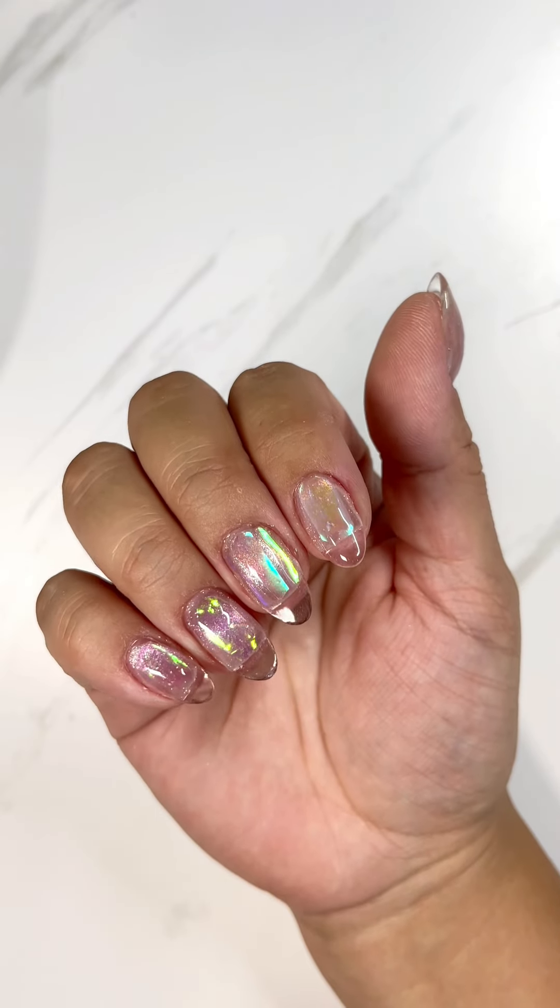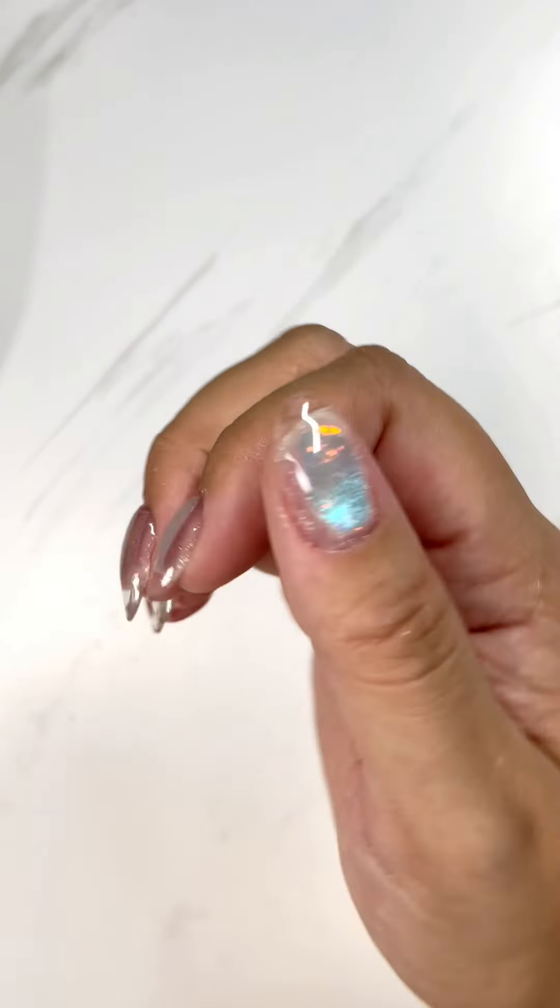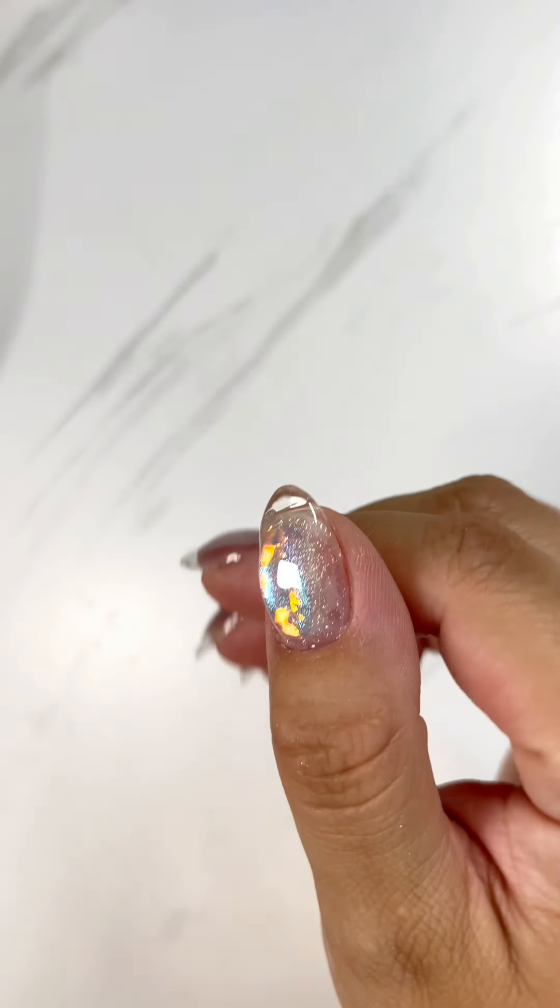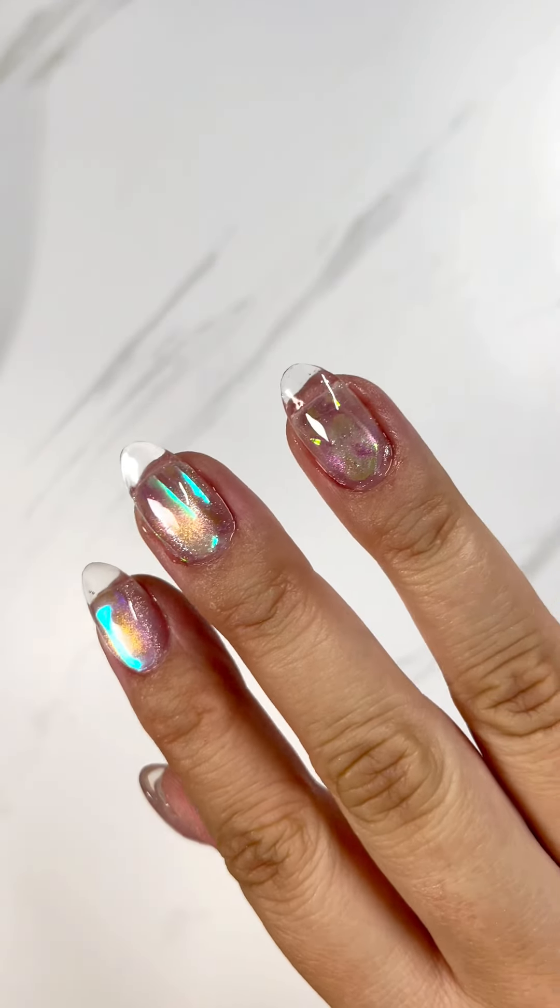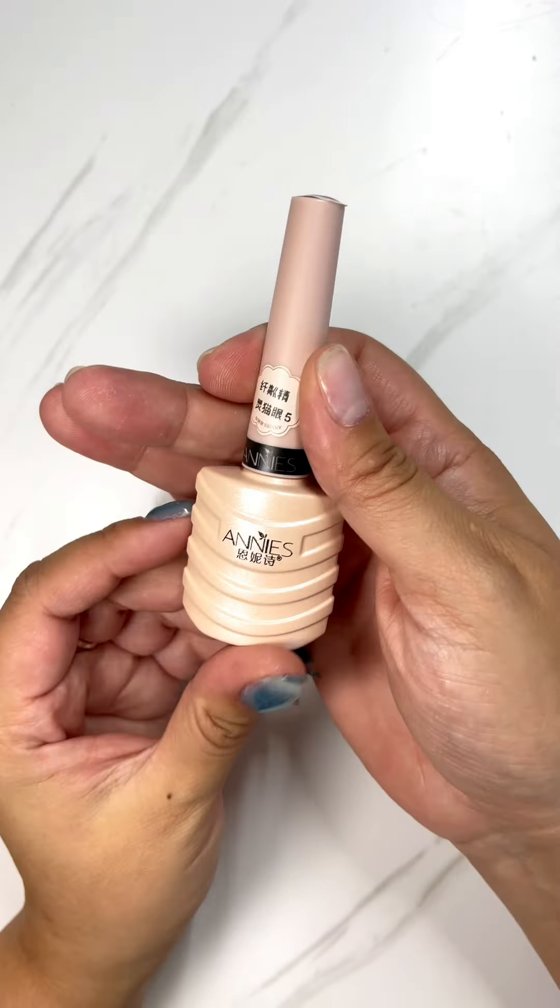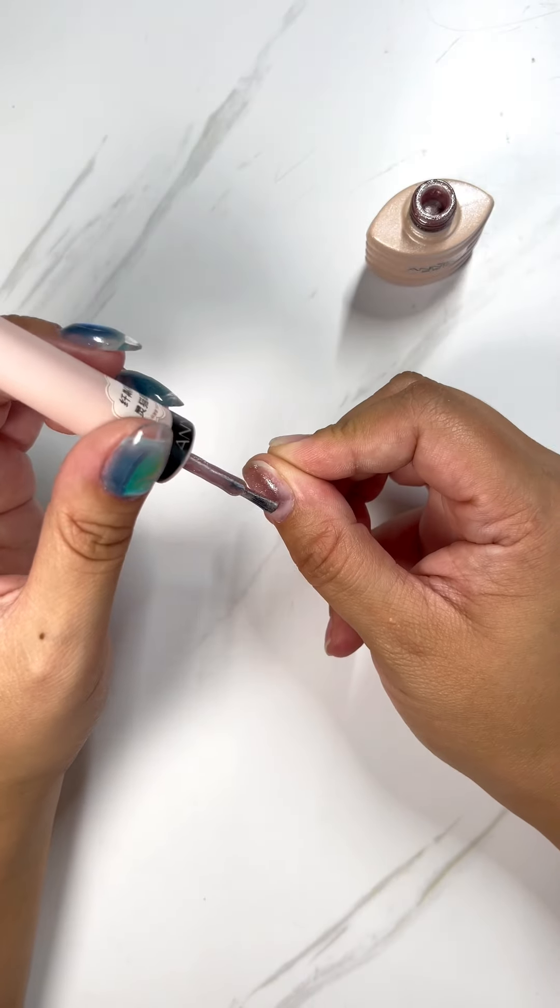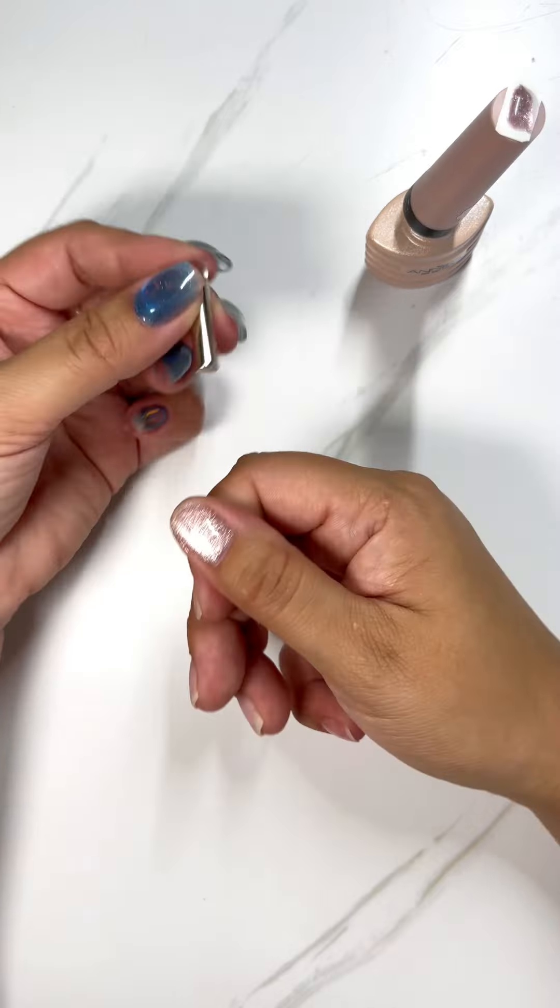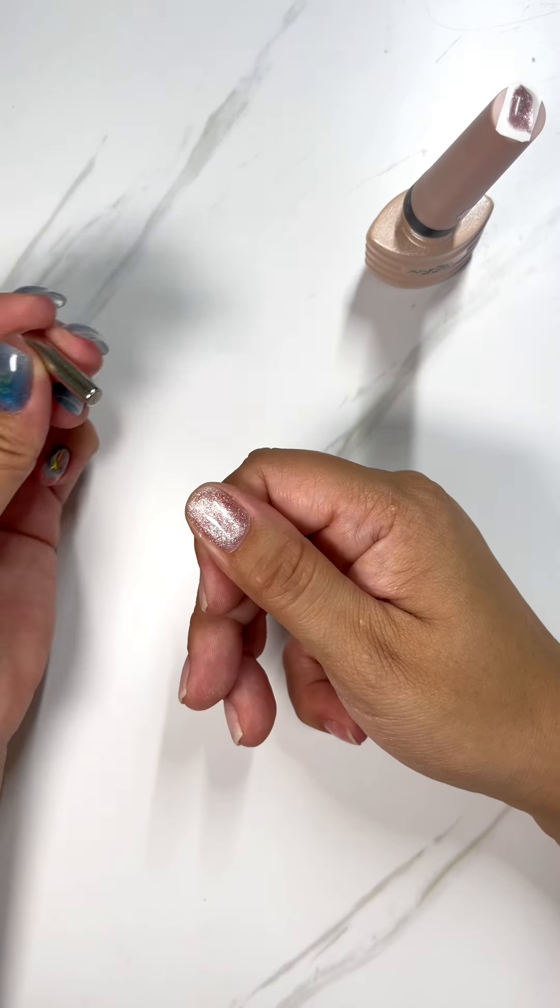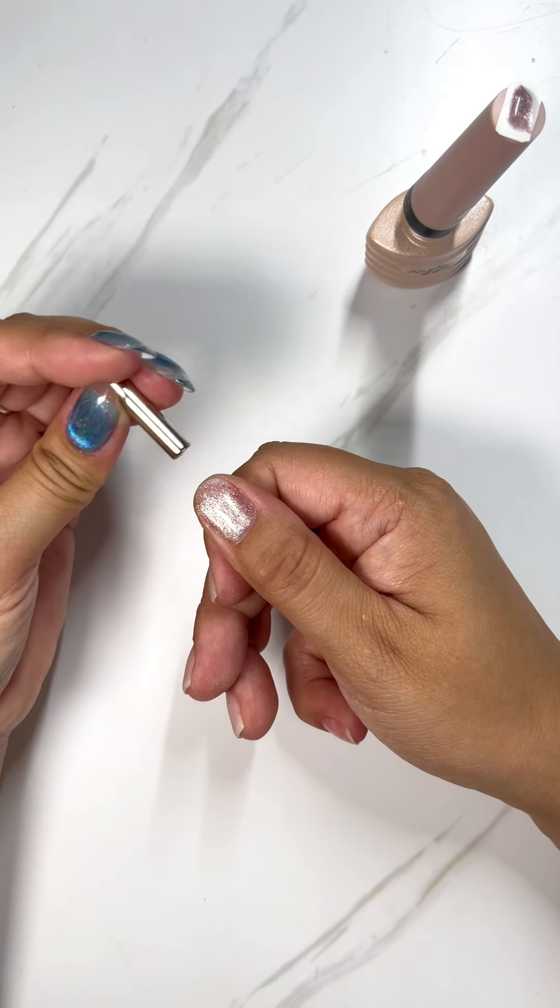Hi everyone, today I'm going to show you how I created this Korean nail design. They're called Aurora Ice Nails. So first off, I got this pale pink magnetic nail polish and I'm just magnetizing all the shimmer to the center.